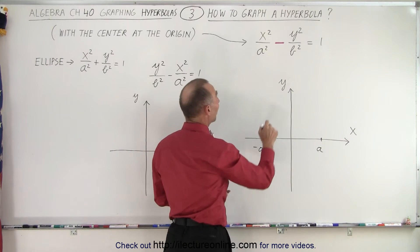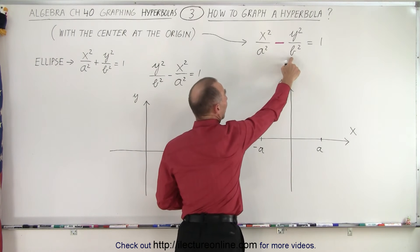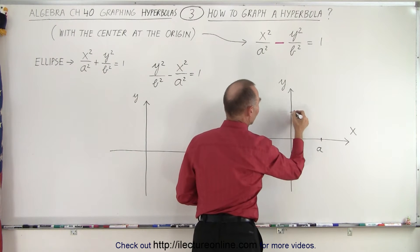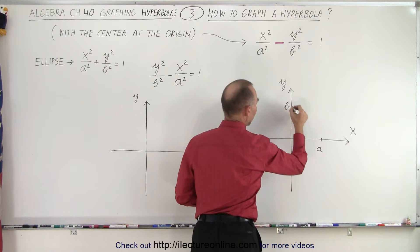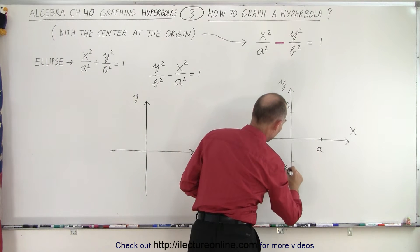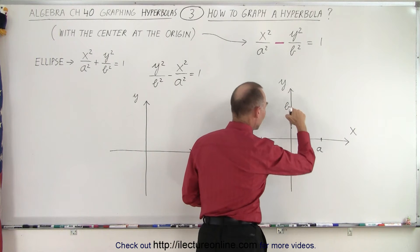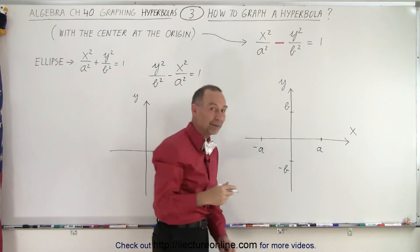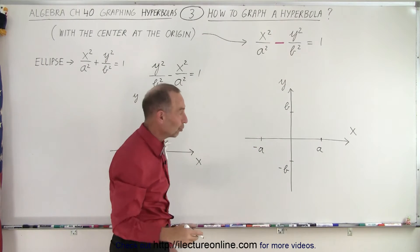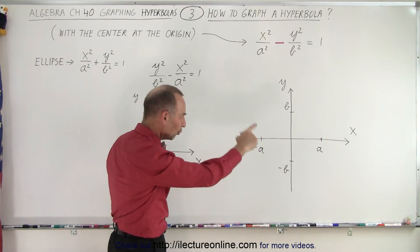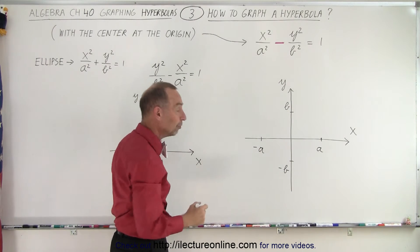Then we find plus and minus B. Plus B, let's say it's over here, and minus B is over here. The distance from the origin to plus B is the same as the distance from the origin to negative B. So now you have those four points.